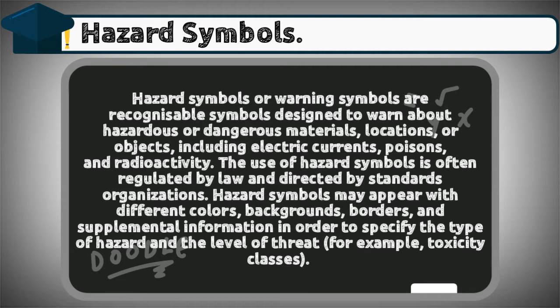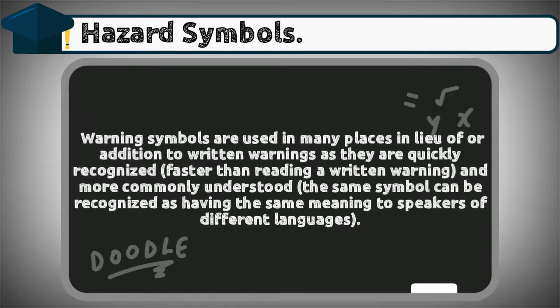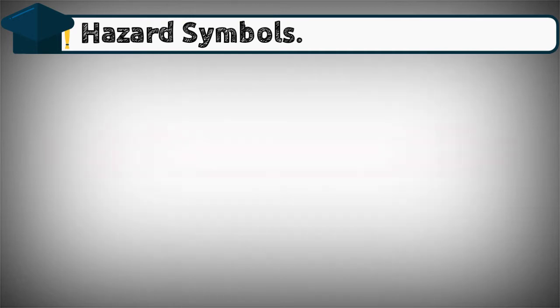Hazard symbols may appear with different colors, backgrounds, borders, and supplemental information in order to specify the type of hazard and the level of threat — for example, toxicity classes. Warning symbols are used in many places in lieu of or in addition to written warnings, as they are quickly recognized, faster than reading a written warning, and more commonly understood. The same symbol can be recognized as having the same meaning to speakers of different languages. There are nine hazard symbols.